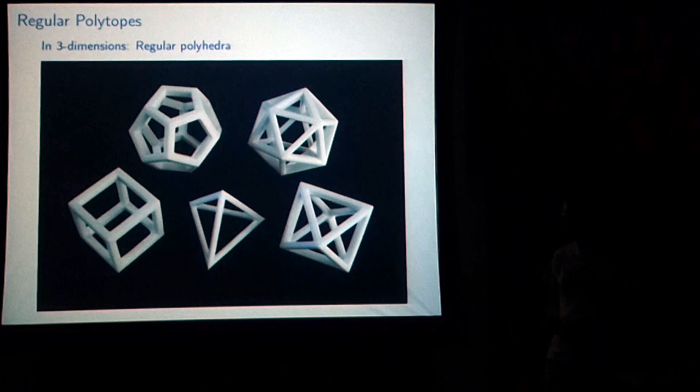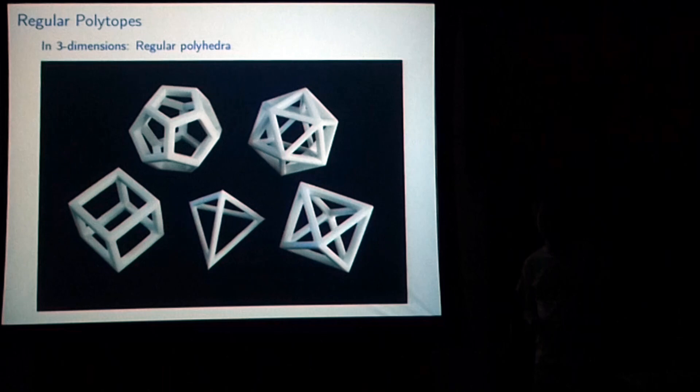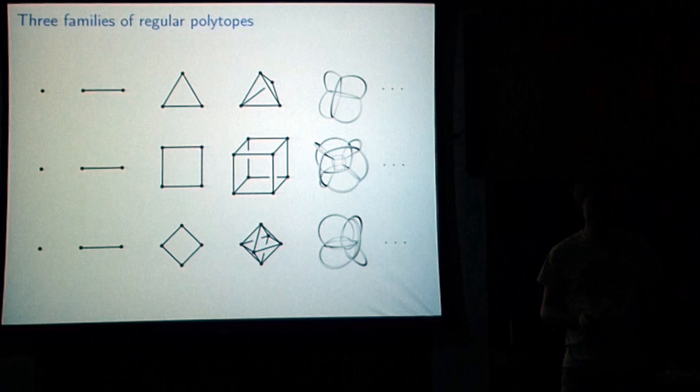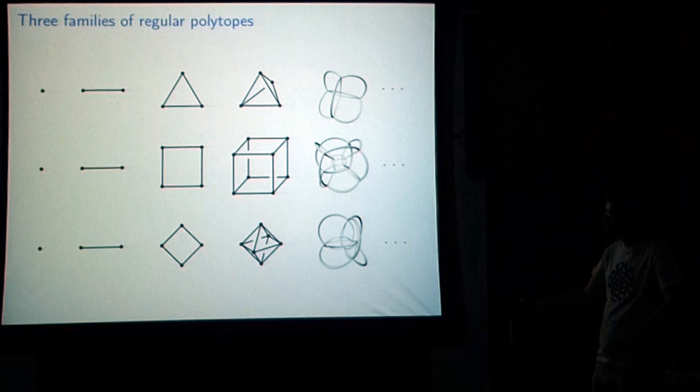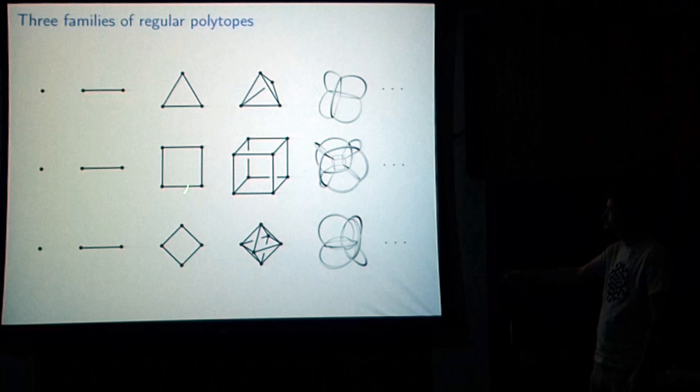We can give the entire picture of all the regular polytopes in every single dimension — it's quite simple. There's one infinite family already: the polygons in two dimensions. There are three other infinite families. The first we've already seen: take a point, copy it, move it in a perpendicular direction, join them — you get an edge. Copy, translate, join — you get a square, a cube, a hypercube. This continues on for every dimension.